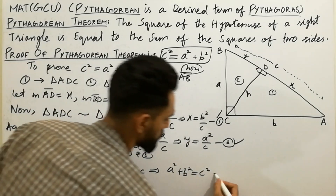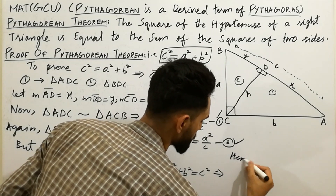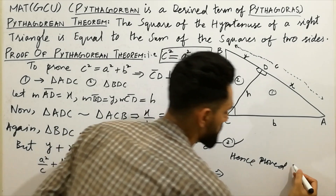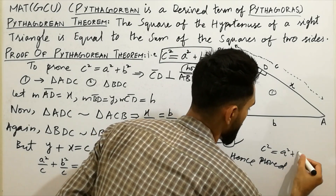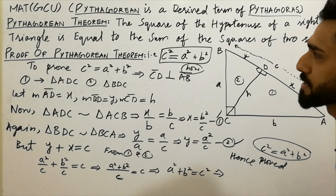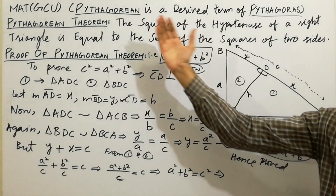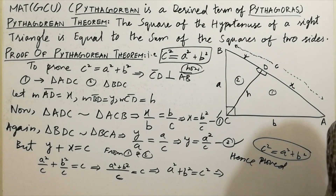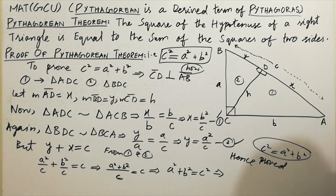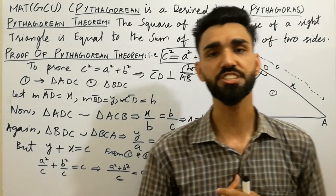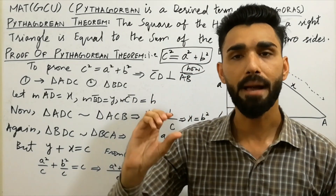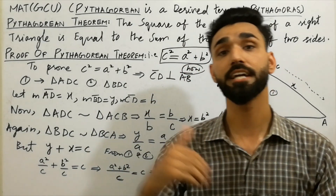Hence we proved that c² = a² + b². I hope you have understood the concepts about the relationship between Pythagoras and Pythagorean, what the Pythagorean theorem is, and what its proof is. Thanks for watching. If you like this video, please subscribe to my YouTube channel and press the bell button for notifications of my new lectures. Goodbye.